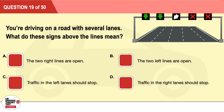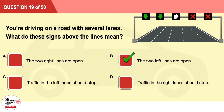Question 19: You're driving on a road with several lanes. What do these signs above the lanes mean? A: The two right lanes are open. B: The two left lanes are open. C: Traffic in the left lanes should stop. D: Traffic in the right lanes should stop. The correct answer is B: the two left lanes are open.